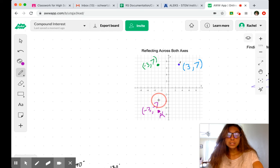So for a reflection across the y-axis, remember your x-coordinate is the one that changes. And for a reflection across the x-axis, the y-coordinate is the one that changes. So it's always the opposite.